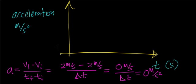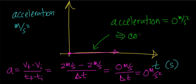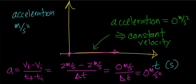So for a constant velocity problem, it doesn't matter what interval of time you're looking at — you're going to get a nice straight line across the time axis. This tells you, one, that acceleration is 0, and two, that this object is traveling with constant velocity. If you were to see this on an acceleration versus time graph, this is what you should understand: it represents a constant velocity problem.